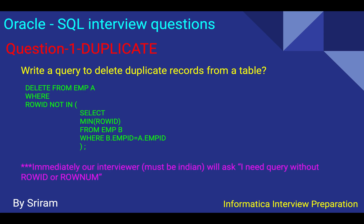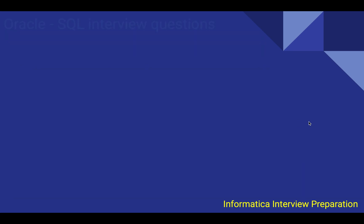If the interviewer asks for a query without ROWID or ROW_NUMBER, there's an interesting perspective: if the database itself provides pseudo columns to handle duplicates and the query works, why would you avoid them? However, in practice, if you insist on using pseudo columns in an interview, the interviewer may not be satisfied. You can acknowledge that you know the pseudo column approach but mention you weren't able to think of an alternative at that moment.